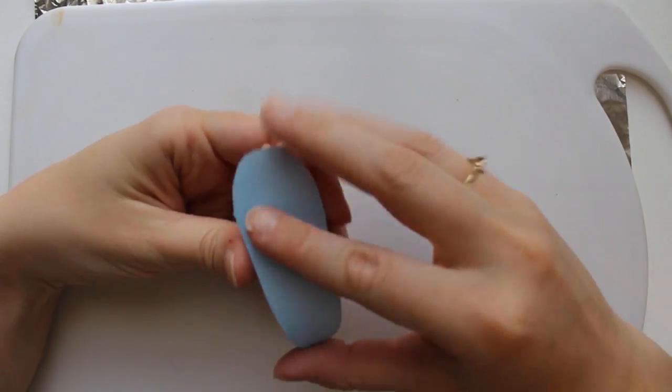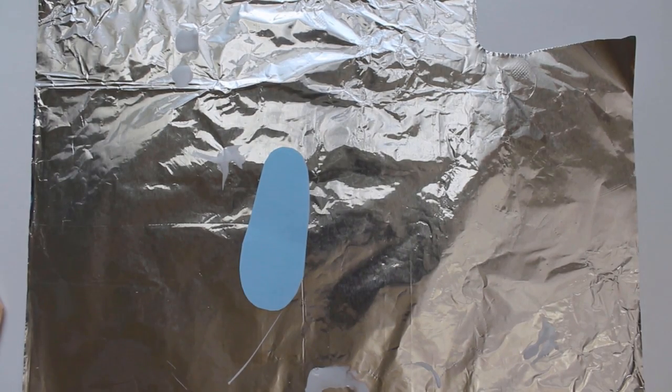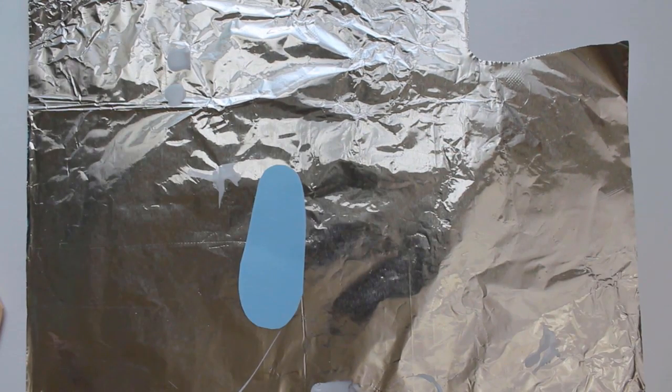This one looks good, so I'll use it to make the master. I begin the process by taking a nice soft piece of polymer clay and rolling it out to a thin sheet.